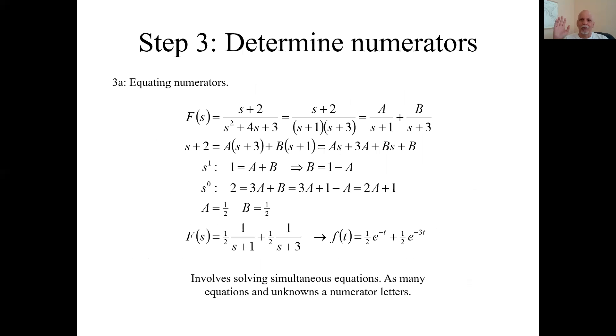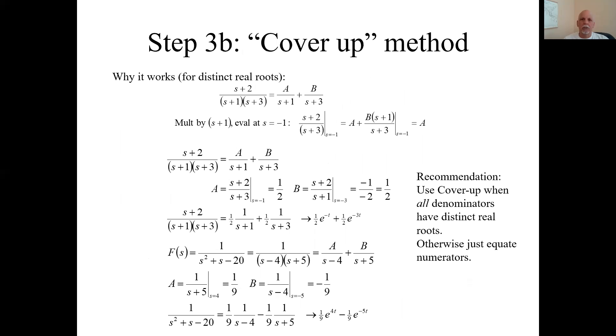So we can handle these kind of complex conjugate pair roots terms special. Otherwise, we'd have to use Euler's formula. So here's the cover-up method. First, why does it work?